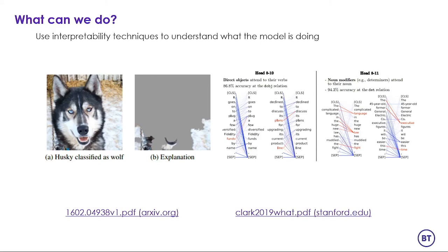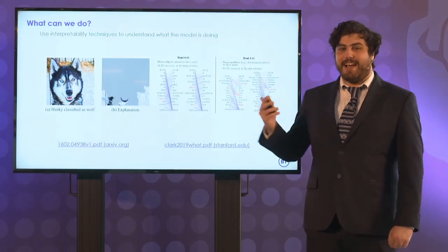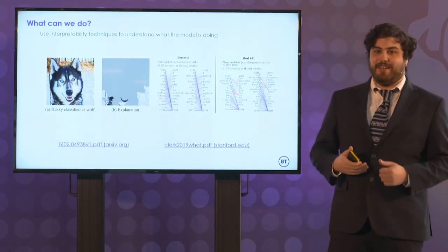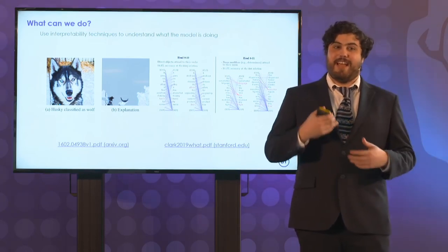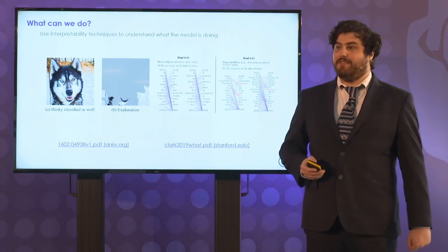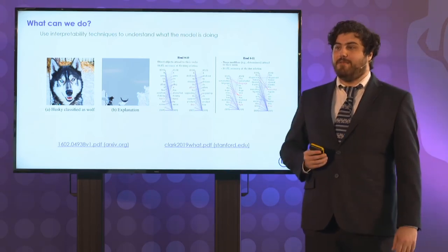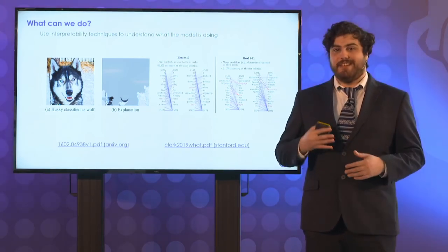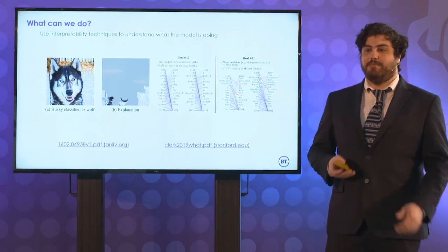We can use interpretability techniques to try and understand what the model's doing. So back to the Husky example, on the slide here, you can see an example of something called LIME, which is local interpretable model agnostic explanations. But essentially, we're trying to work out where in the image is the model looking to be able to make its predictions. And you can see, using this sort of technique, we can identify, ah, it's just looking at the snow in the background. So our model hasn't learned the underlying things. Maybe we need to go back to the drawing board and have another look at our data, as Detlef explained earlier. And there's a similar example on the right here to do with text, the text domain, and working out how the model sees the link between words.